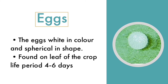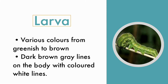The larvae have various colors and different forms by stages. It ranges from greenish to brown in color. There are dark brown-gray lines on the body with lateral white lines. The life period of larvae is 14 to 20 days.